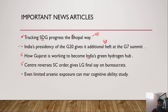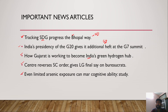Another article covers the Centre reversing the Supreme Court order, giving the Lieutenant Governor final say on bureaucrats in Delhi. The tussle between the Delhi government and the Union government continues as the Centre passed an ordinance bypassing the Supreme Court order, giving the LG final power over the appointment and transfer of administrators in the Union Territory of Delhi.